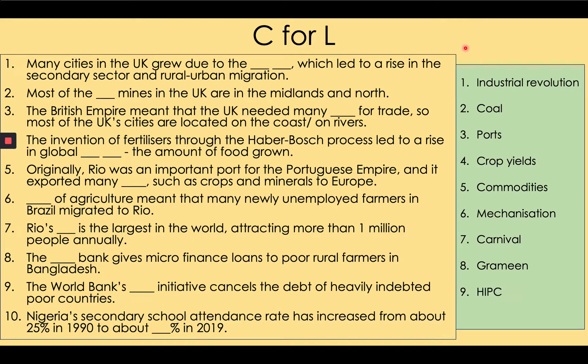Number 9: The World Bank's HIPC initiative cancelled the debt of heavily indebted poor countries. Number 10: Nigeria's secondary school attendance rate has increased from about 25% in 1990 to about 52% in 2019. Give yourselves a mark out of 10. If you got 8 or more, excellent — you've really understood these ideas. Any questions that you got wrong, test yourselves on them in a week's time and repeatedly so that you remember them.